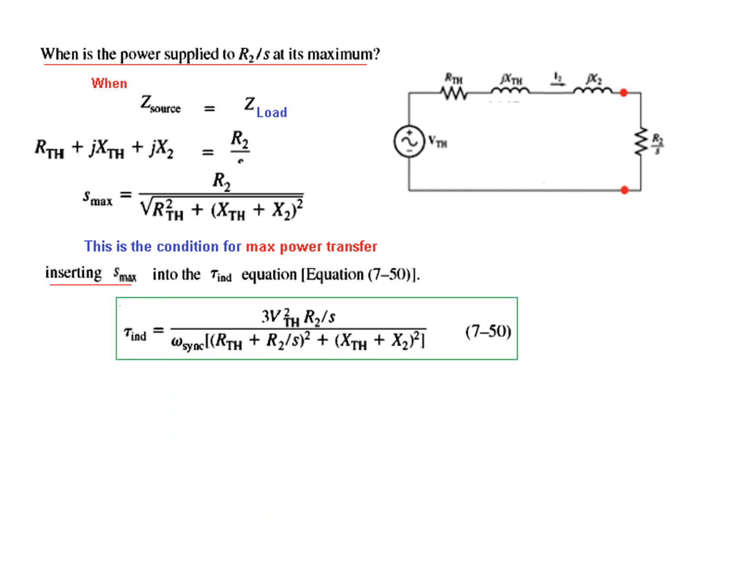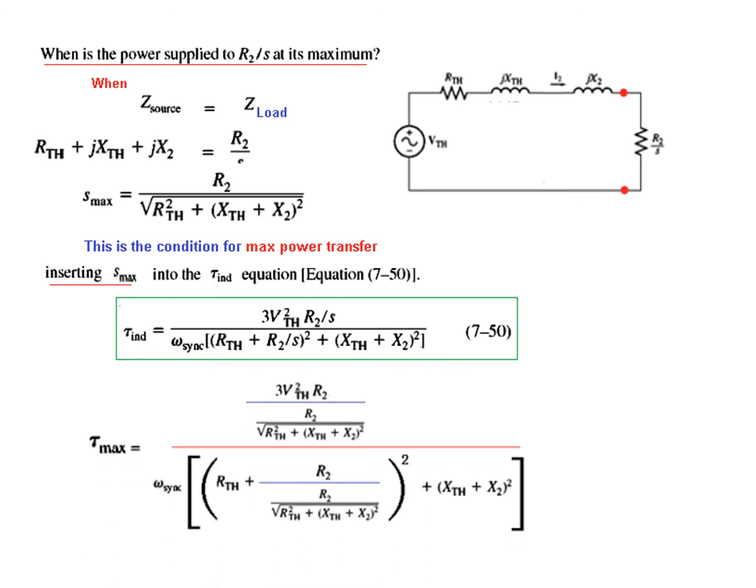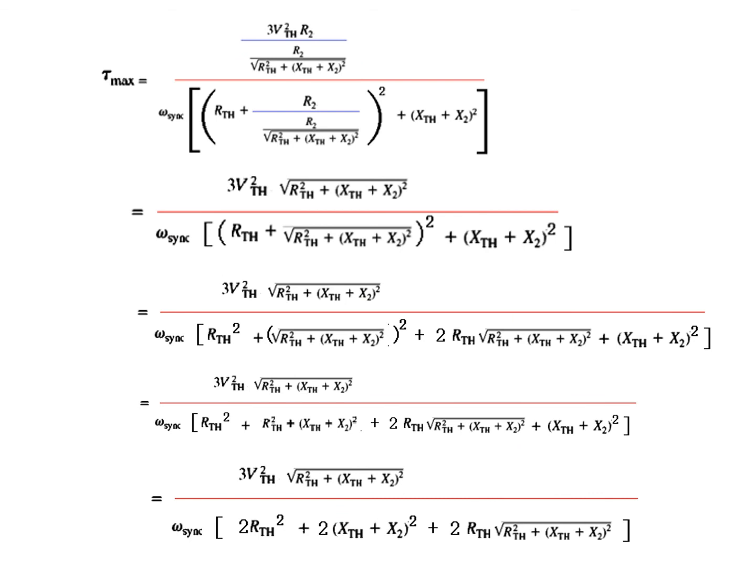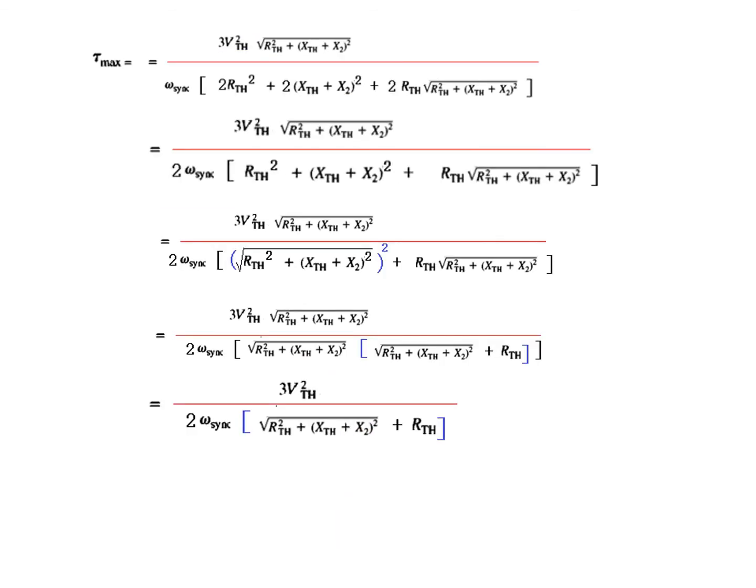So inserting s_maximum into the T_induced, we can get now T_maximum. So T_maximum, we have put in the value of s in this equation and here also. So we get this equation. And now we can simplify. I have done all the steps, you can pause the video and follow each line. This cancels, this gets cancelled, and step by step you go. Also some more steps. So this is the final value of T_maximum. And this is same as given in the book. So this is what is given in the book.